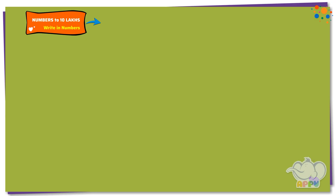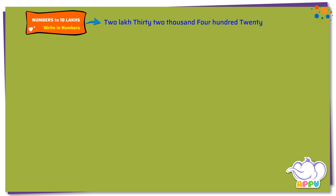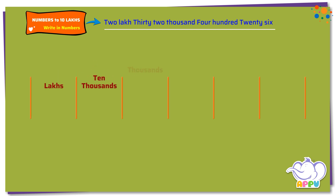Write in numbers 2,32,426. To represent a number, we make a table of lakhs, ten thousands, thousands, hundreds, tens, and ones.